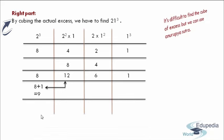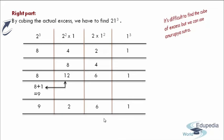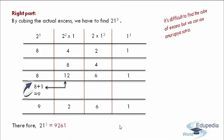Now I am writing the answers in each part: 1, 6, 2, and 9. By combining all these numbers, we get the final answer. Therefore, 21 cube is equal to 9,261. Therefore, this 9,261 is regarded as the required right part.